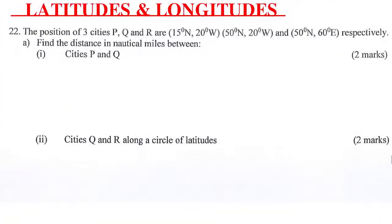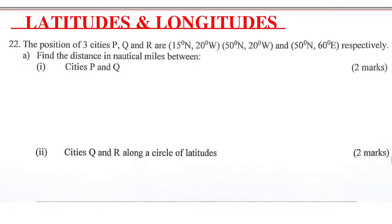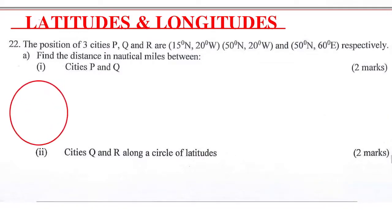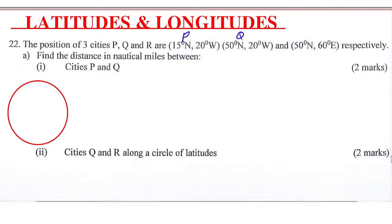So those are the questions. Let's go to the first part. Given three cities P, Q, and R, we begin by sketching the positions of these cities. So you have cities P, Q, and R. P is the first one, this is P, then this one is Q, and this one is R.